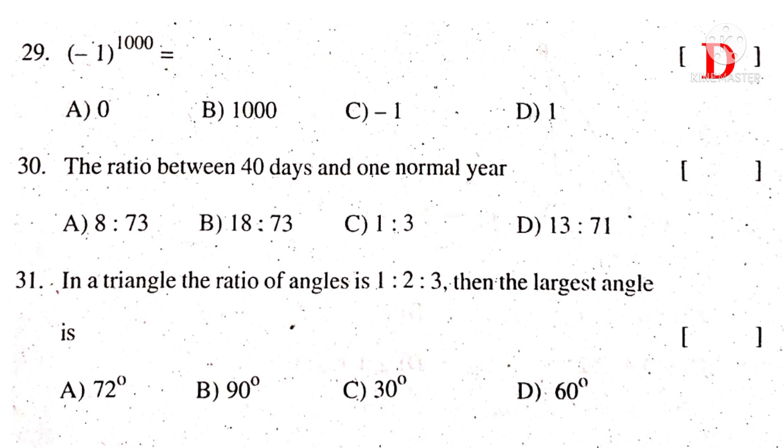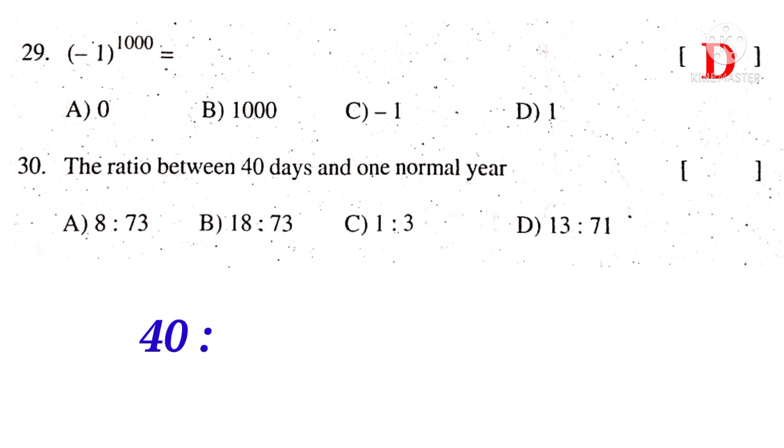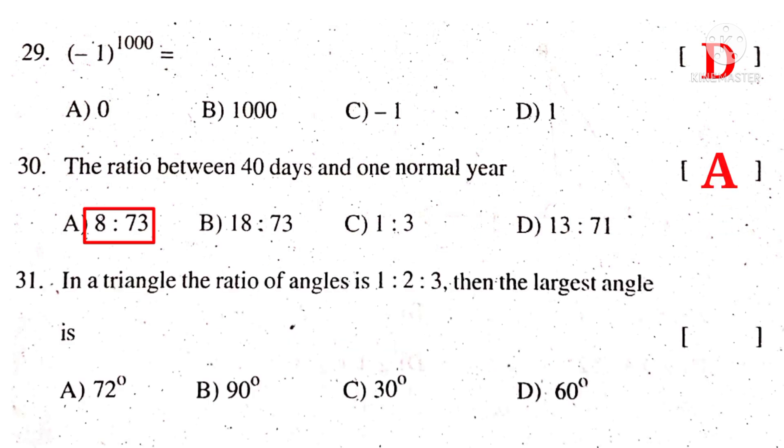30. The ratio between 40 days and 1 normal year is. 40 is to 365. On simplification by 5, 5 8 times, 5 73 times. So 8 is to 73 is the answer. So the correct choice is A.